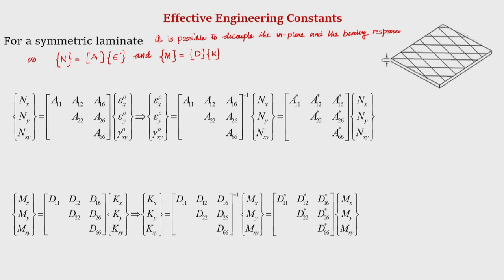If we expand this, we can write Nx, Ny, Nxy as the in-plane force resultants per unit length, and ε_x⁰, ε_y⁰, γ_xy⁰ as the in-plane mid-surface strains. Taking the inverse of the A matrix, we can write the mid-surface strains in terms of the force resultants. The elements of the inverted matrix are denoted with a star, so A11*, A12* are elements of the A-inverse matrix. This is equation number 1.